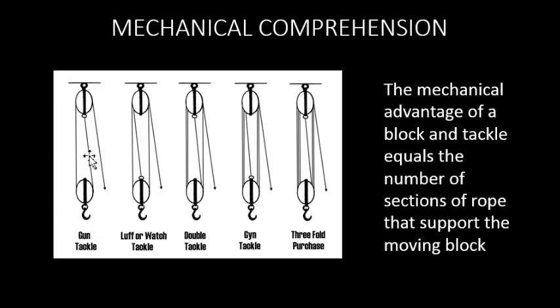So this has a mechanical advantage of two, not including the pull rope. This is a mechanical advantage of three: one, two, three. Four, five. And this has six. So this is the easiest, or this will lift the most weight with less effort.